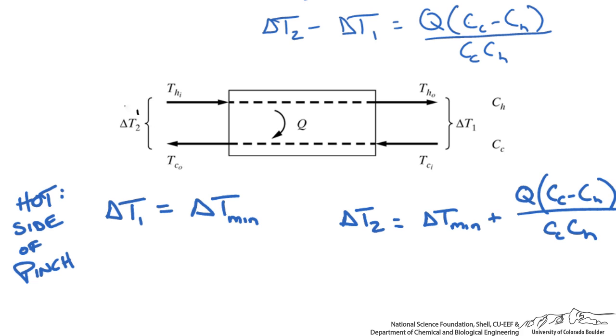To ensure that our delta T2 is going to be greater than our approach temperature, this value on the right side has to be positive. Since Q is positive and our heat capacity flow rates are positive, that means CC has to be greater than or equal to CH.